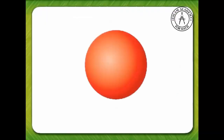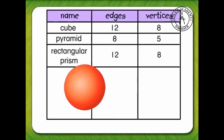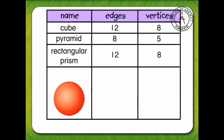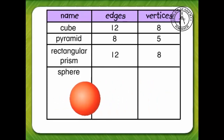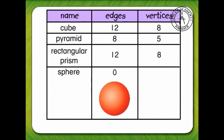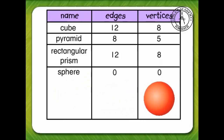One more time. Name that figure. It's a sphere. A sphere is round and can roll any way. A sphere has zero edges and zero vertices.